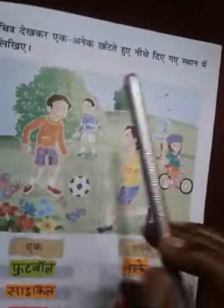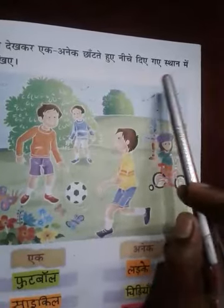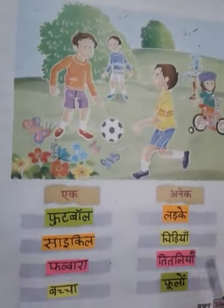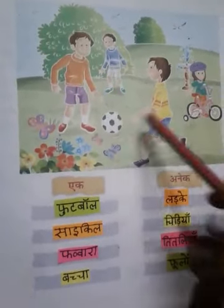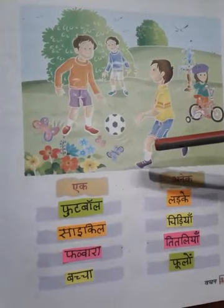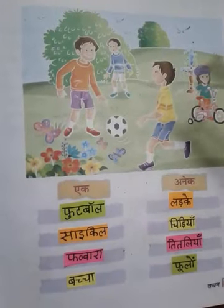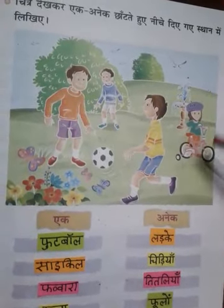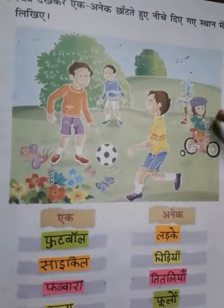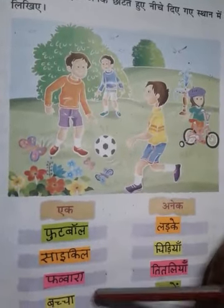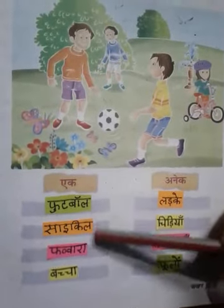Ab agla prashna hai: chitra dekh kar ek aur anek chhadke neeche diye gaye sthan mein likhein. Yahan jo khali sthan diye gaye hain, yahan ek aur anek in chitron se chhadkar hame likhna hai. Aao sabse pehle hum dhundhe is chitra mein — to football, cycle, phawara, baccha — inki sankhya ek hai, to inhe hum is tarah se in khali sthanon par likhte hain. Is parkar inhe bharna hai.